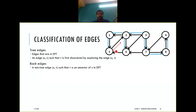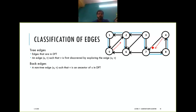Edge 5 to 2 is a back edge because 2 is an ancestor of 5. Similarly, edge 4 to 7 is also a back edge: 4 to 7 is not a tree edge, and 7 is an ancestor of node 4, so this edge is connecting back to an ancestor.